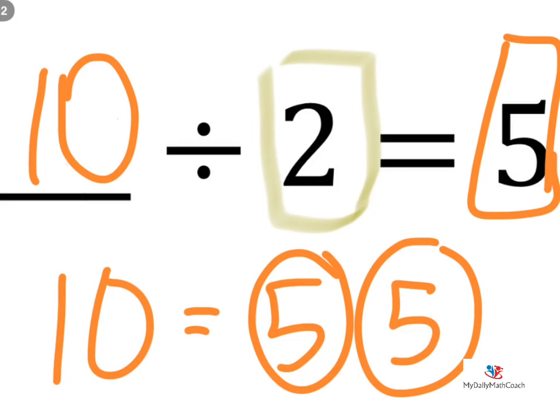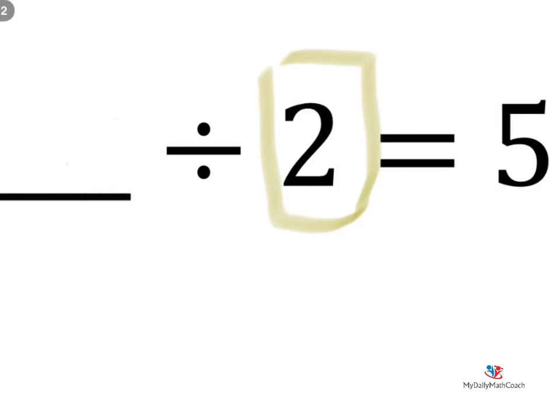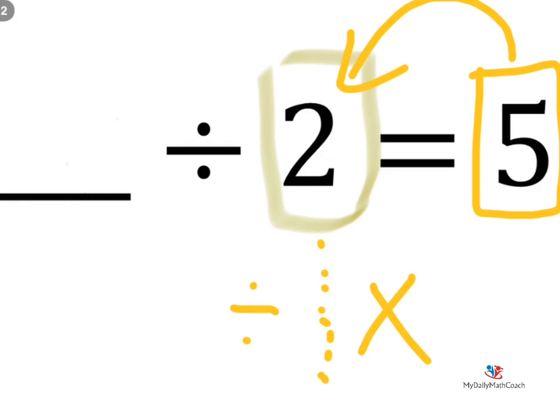There's one other strategy I like to use. This strategy is called opposite operations, and it works for most of the operations. We know that division has an opposite. The opposite of division is multiplication. So what we do is take our number 5 and multiply it times 2. 5 times 2 gives you an answer of 10.